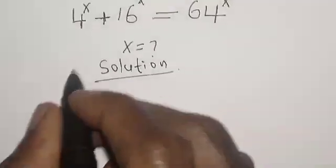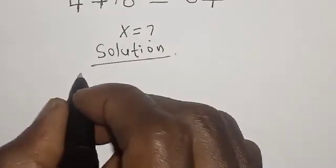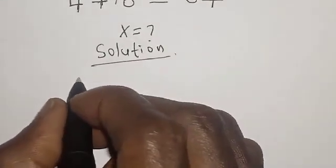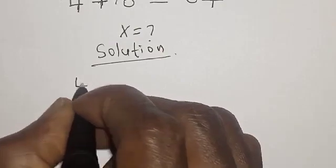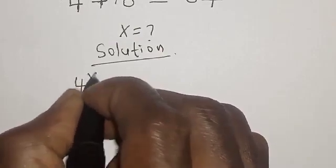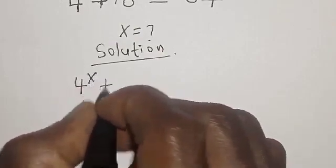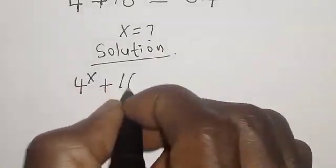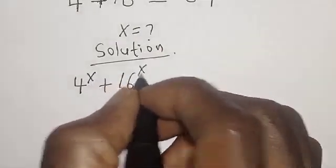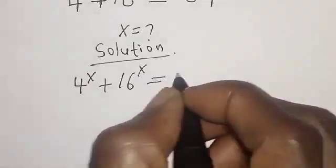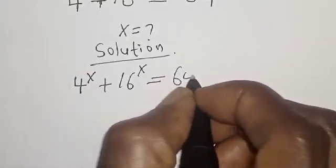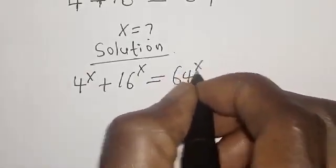Solution. The equation given is 4 raised to power s plus 16 raised to power s is equal to 64 raised to power x.